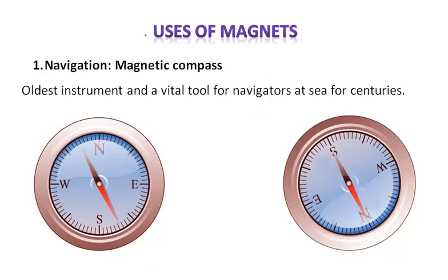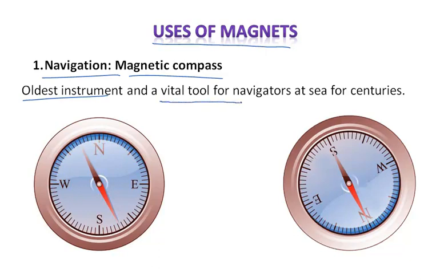Hello students. Now let us look at various uses of magnets. The first and foremost use of a magnet is in navigation, or what we call a magnetic compass. It's the oldest instrument being used and it's a vital tool for navigators. Navigation means you find directions with the help of a magnetic compass. It helps you navigate through the sea, giving you the exact position where you are on the earth and where you should sail henceforth.